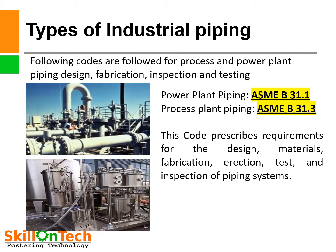Types of industrial piping. The following codes are followed for process and power plant piping — design, fabrication, inspection, and testing. A picture of power plant piping is shown at the top of the slide, where steam power lines and hot lines of condensate have been shown. Power plant piping is done as per ASME B31.1. Process plant piping is done as per ASME B31.3. This code prescribes requirements for the design, materials, fabrication, erection, test, and inspection of piping systems.